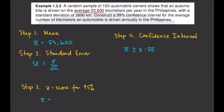For the standard error, we need the standard deviation and the sample size. The standard deviation is 3,890 and n is 150, so SE equals 3,890 divided by the square root of 150, which is approximately 317.6172.